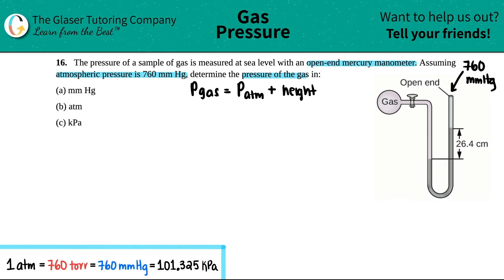So let's fill in the numbers here. So pressure of the gas would equal the atmospheric pressure, which they told us, which was 760 millimeters of mercury. And now we're going to add the height between the two sides of the manometer. So that's 26.4. And they told us that that's centimeters. And they said that it was an open-ended mercury manometer. So this is centimeters of mercury.